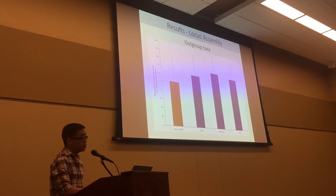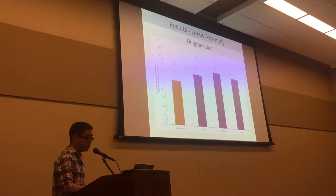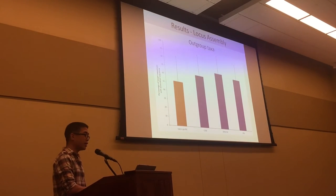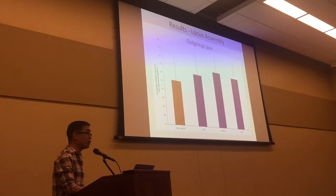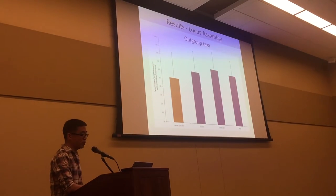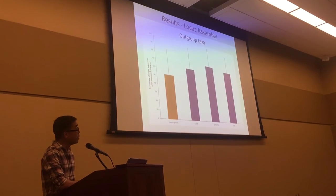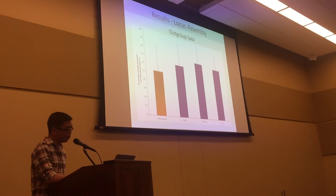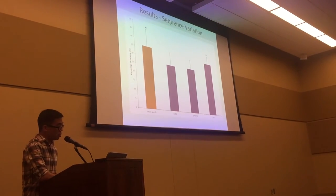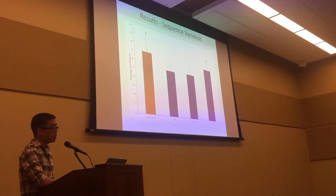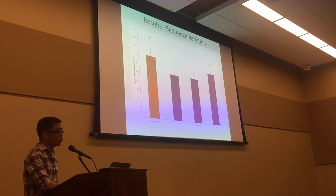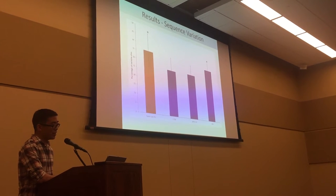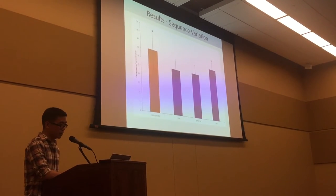When we look at the outgroup taxa, we see a greater difference between sets. The taxon-specific set had a lower average percentage of target loci with assembled sequence, which we might expect since those loci were identified specifically for the ingroup. Looking at the percentage of variable sites in individual loci, the average was significantly higher in the taxon-specific and PPR sets.